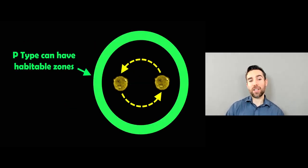Now, P-type can have a habitable zone. So the habitable zone where the planet is where it could possibly have liquid water on its surface is going to be outside of the two stars here. So you can have a habitable zone there and it can be stable. So it's actually quite interesting here because then you have the potential for habitable planets orbiting a binary star system.